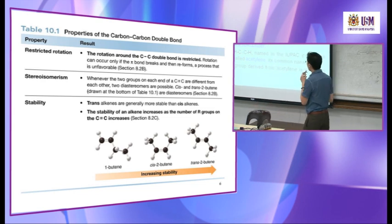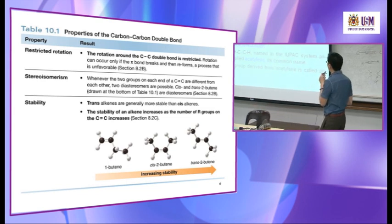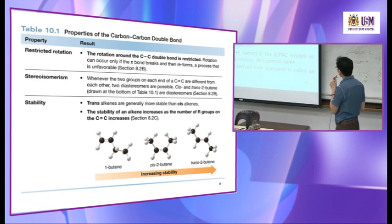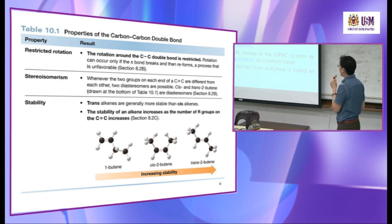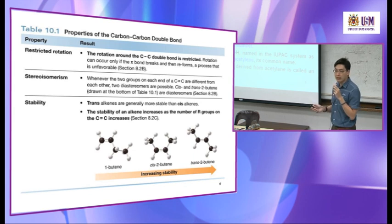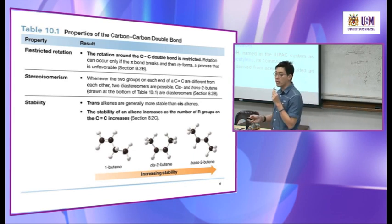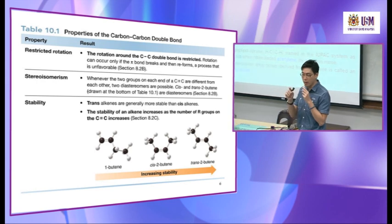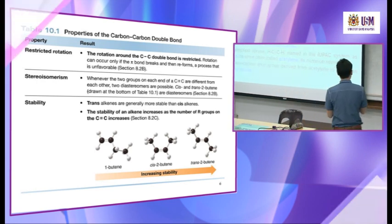Compounds with both a double bond and a triple bond are named as 'enyne'. The numbering must give the lowest number to the first unsaturated bond. It doesn't matter whether it's a double bond or triple bond — the unsaturated bond is numbered first.